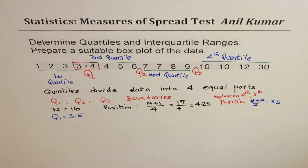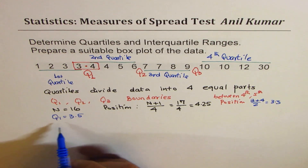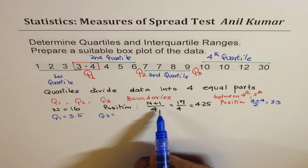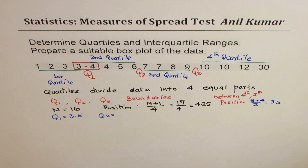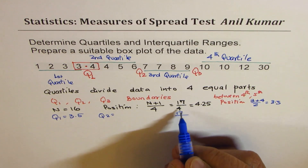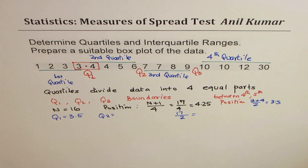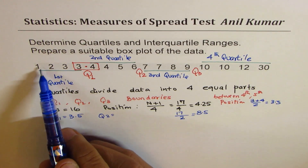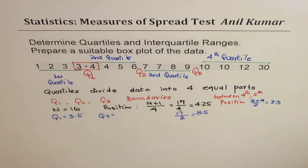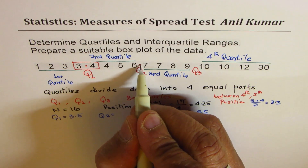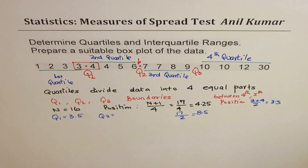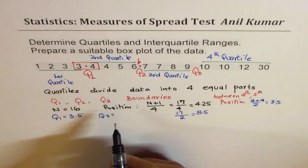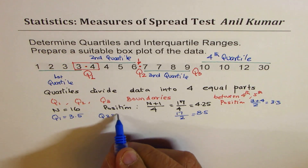Now what is Q2? We apply the same formula and find the position. Q2 will be N+1 divided by 2, so 17 divided by 2 = 8.5. So we look between the 8th and 9th elements. Counting through the data, the 8th and 9th values are 6 and 7. We take the average: 6 plus 7, divide by 2, which gives 6.5. So Q2 = 6.5.